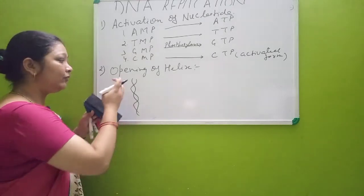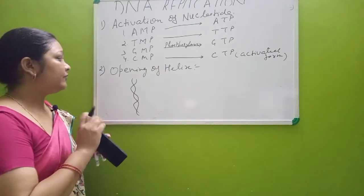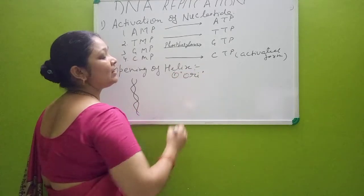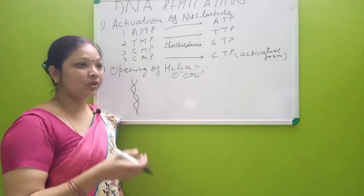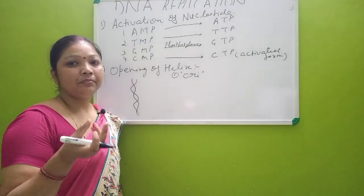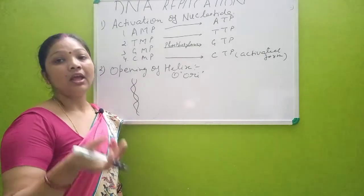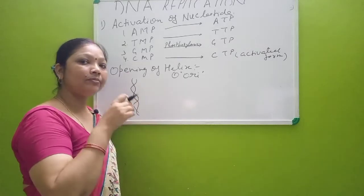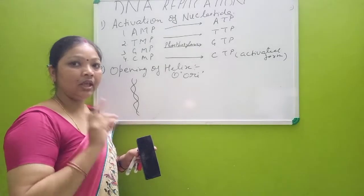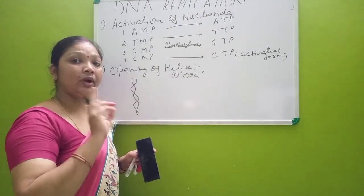For the opening of the helix, first what is required is the ori — the origin of replication. The ori is a short, special sequence of nucleotides that is recognized by the enzyme, and from there the unwinding of DNA starts. In prokaryotic cells, there is only one ori present.